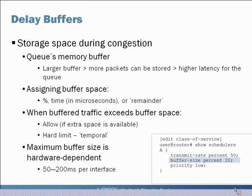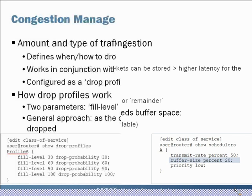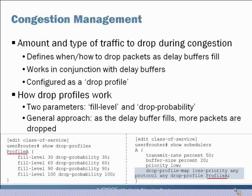The total buffer space available for an interface can be from 50 to 200 milliseconds depending on hardware, so you'll need to check your product documentation. The last parameter is congestion management: when things get congested and buffers fill up, we decide how much and what kind of traffic to start dropping. You can prioritize what kind of traffic gets dropped and how quickly it starts to drop — a ramp-up effect rather than an all-or-nothing situation. This is configured using a drop profile.